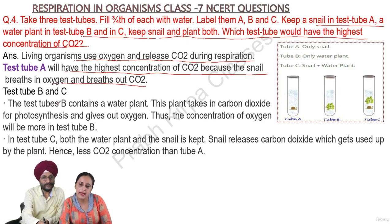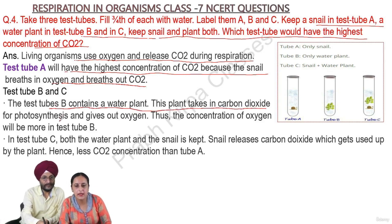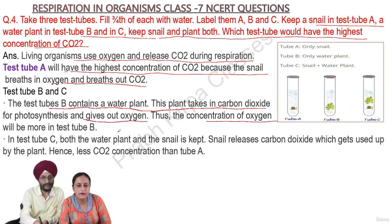Now considering test tube B and C: Test tube B contains a water plant. This plant takes in carbon dioxide for photosynthesis and gives out oxygen. Thus the concentration of oxygen will be more in test tube B.